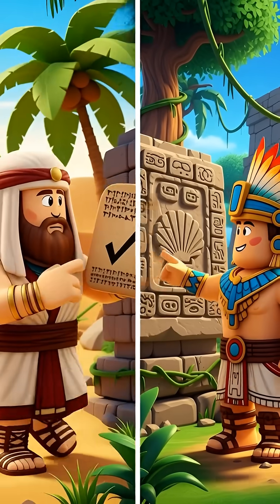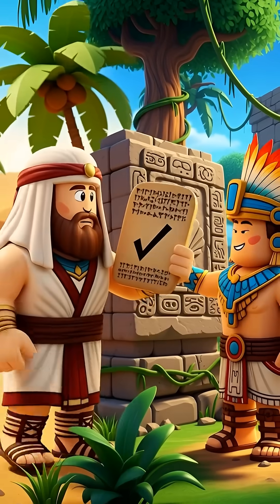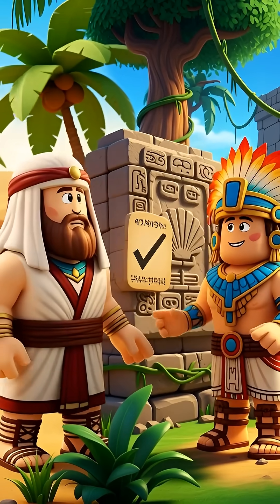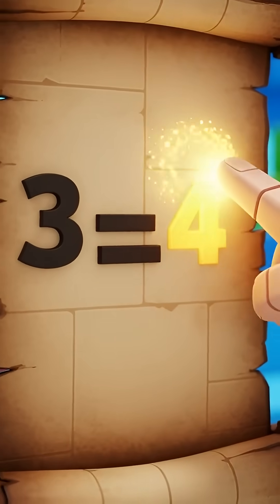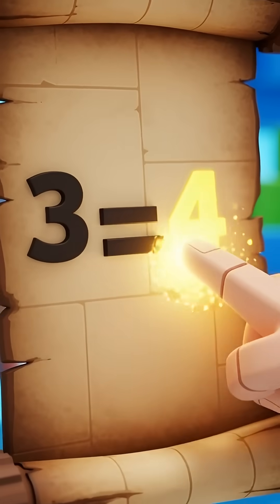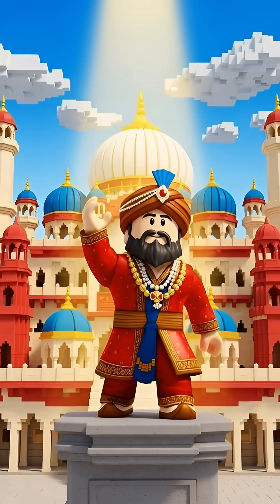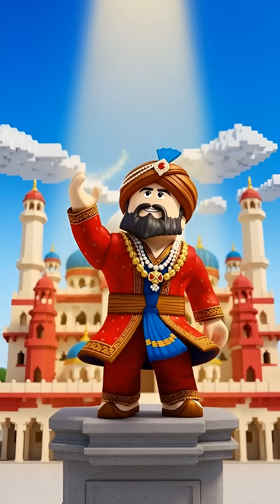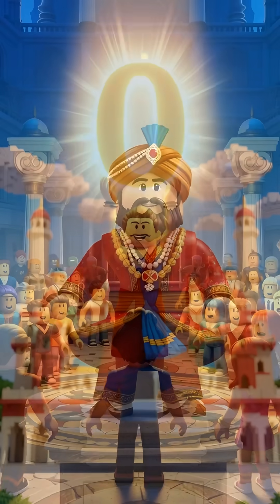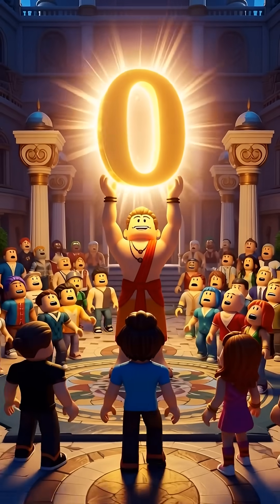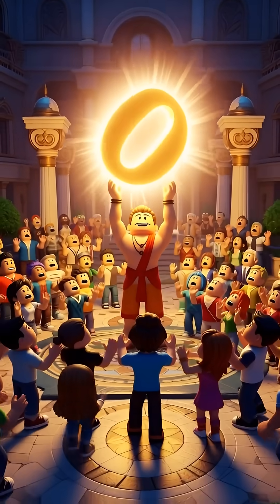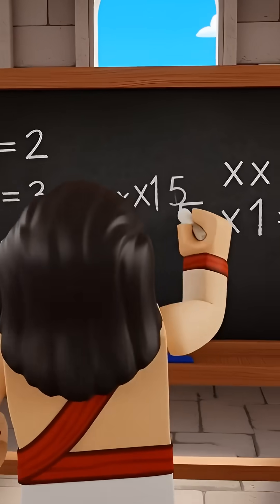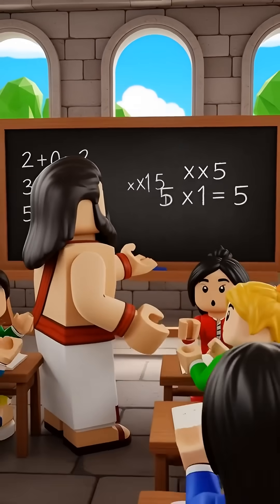Long ago, ancient civilizations like the Babylonians and Mayans had ideas for nothing. They used a special space or a symbol to show an empty spot. But the real hero of our story is an amazing mathematician from India named Brahmagupta. Around the year 628, he gave us zero as a real number, with rules just like number one or number two.